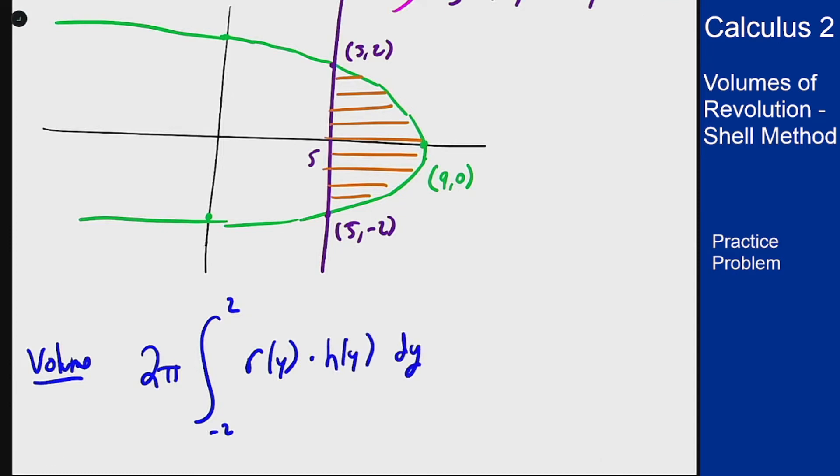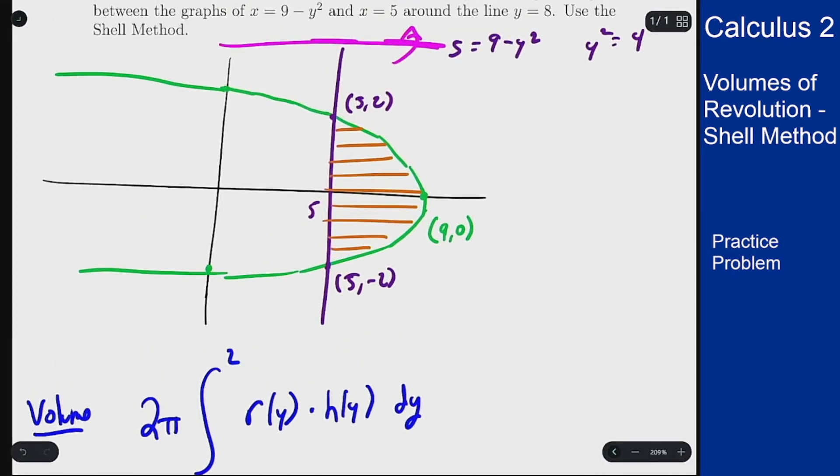Now what are those two things? Well the radius is going to be the distance from whatever y value we're at to the axis of rotation. So the radius will be the distance here. So the radius is just 8 minus y.